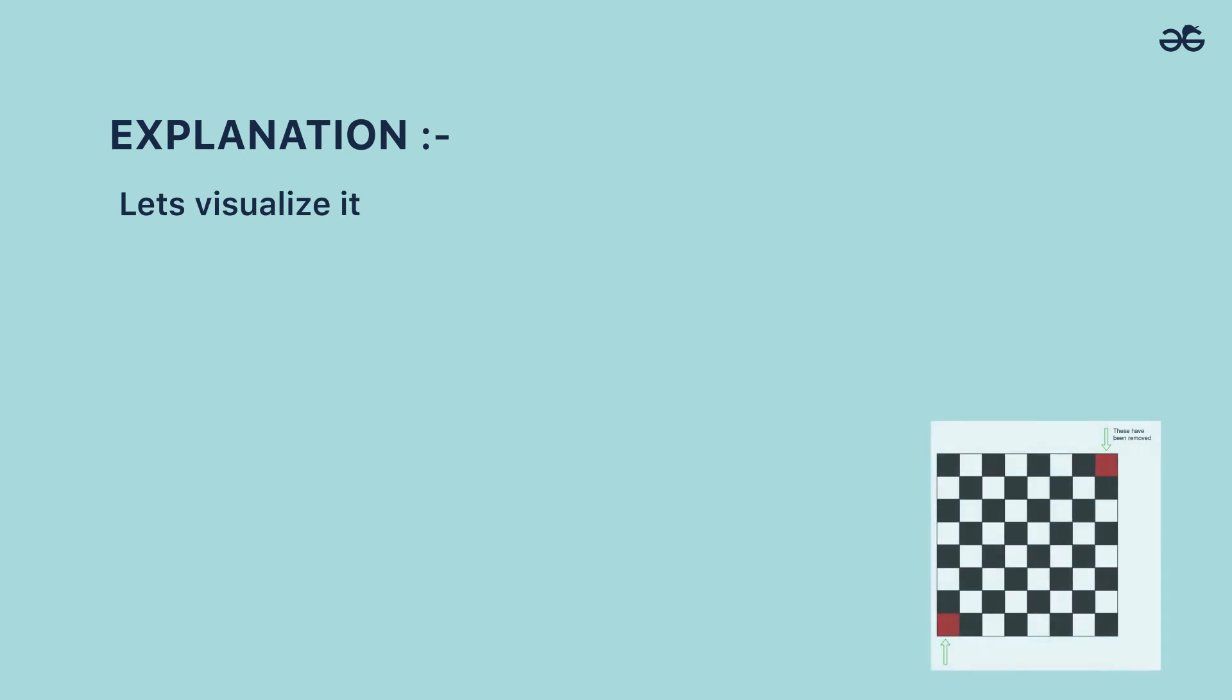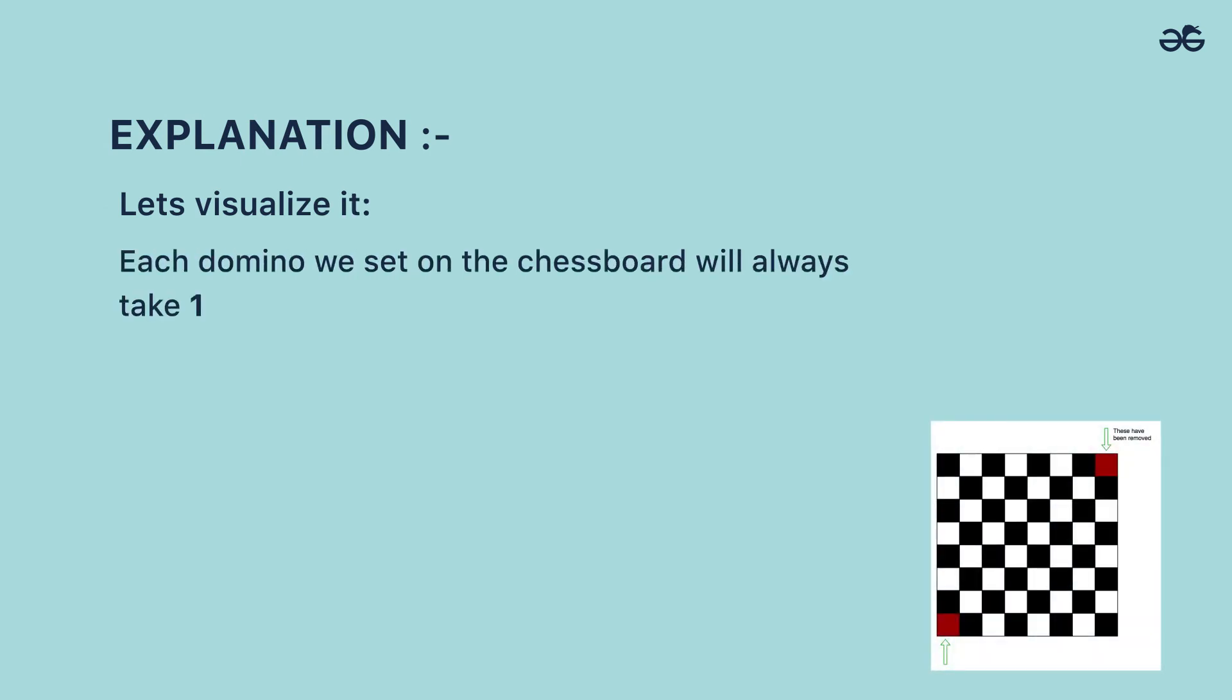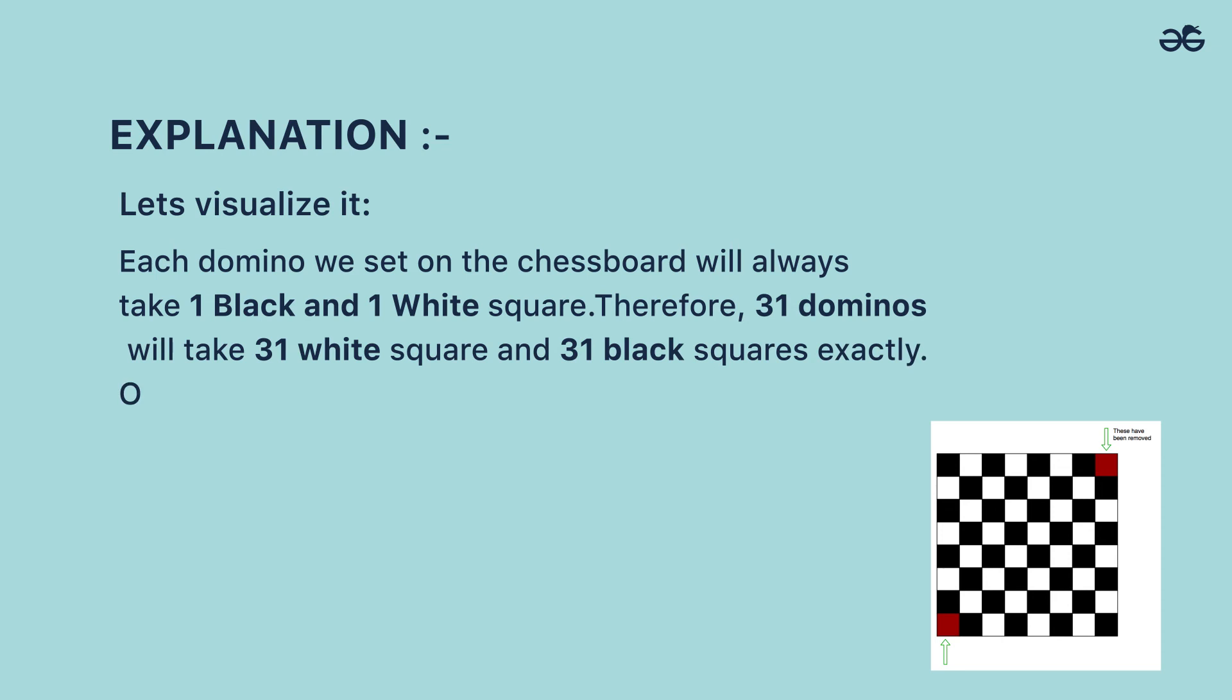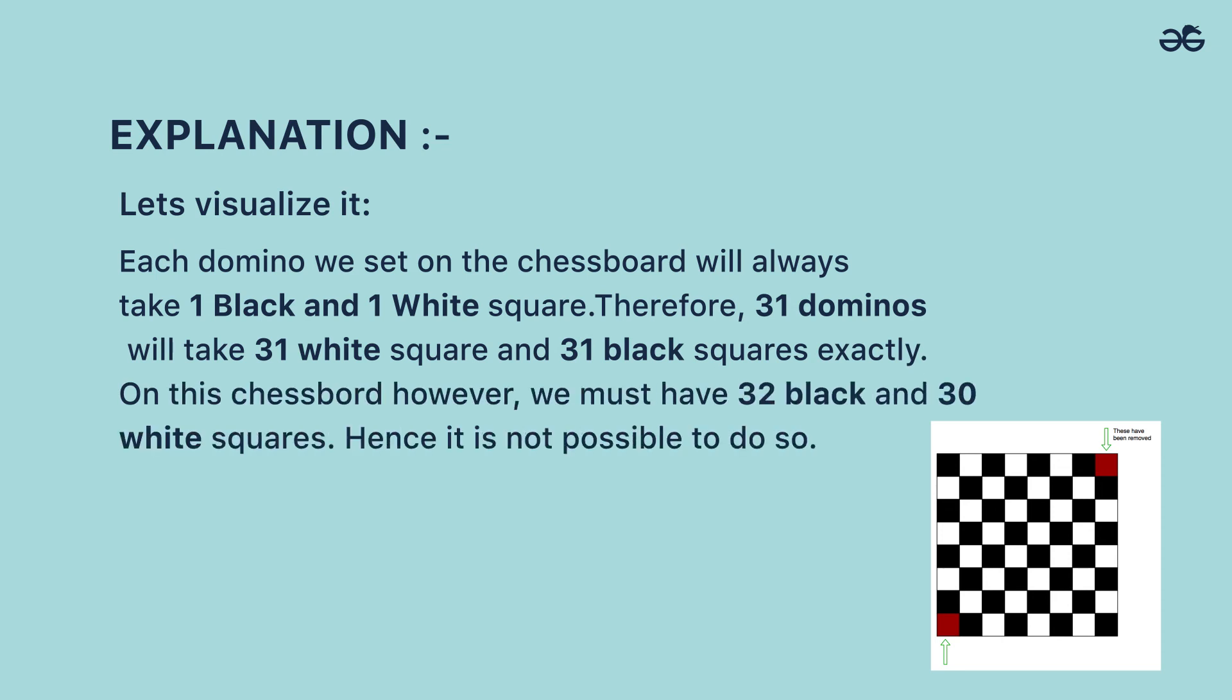Let's visualize it. Each domino we set on the chessboard will always take 1 black and 1 white square. Therefore, 31 dominoes will take 31 white squares and 31 black squares exactly. On this chessboard, however, we must have 32 black and 30 white squares. Hence, it is not possible to do so.